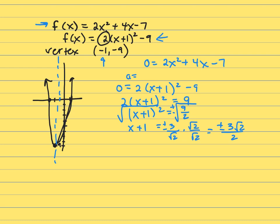Because square root of 2 times square root of 2. So x plus 1 equals plus or minus 3 square roots of 2 over 2. And now let's subtract this 1 from both sides. And that gives me x equals negative 1 plus or minus 3 square roots of 2 over 2.